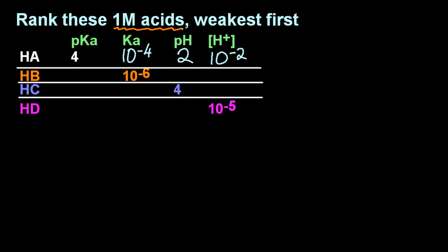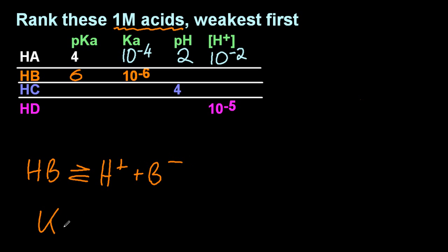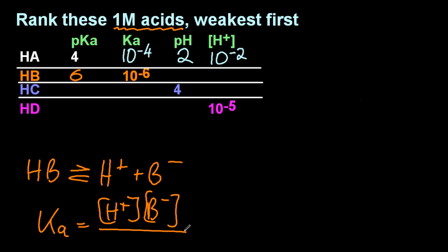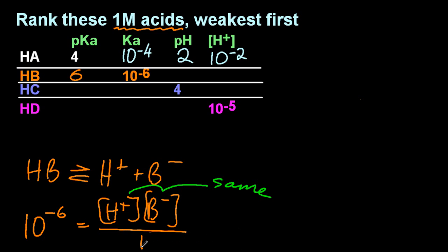The next acid is Hb. For completeness, let me fill in what pKa is — it's 6. pKa is negative log Ka, so that 6 just moves over. There's the dissociation for Hb, one molar at the bottom. H+ and B- are the same, and Ka is 10 to the minus 6. Solving for H+, I get 10 to the minus 3, and that's pH 3.